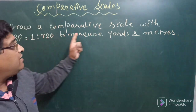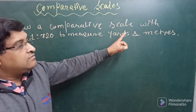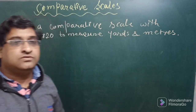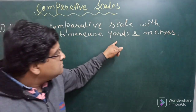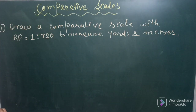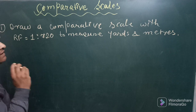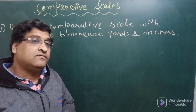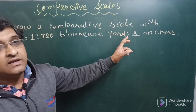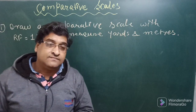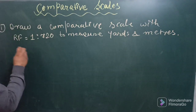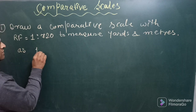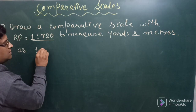Here we have one problem: draw a comparative scale with RF = 1:720 to measure yards and meters. On one side of the scale we will measure yards, and on the other side we will measure meters. We need to find the length of scale for drawing. Most of the time the length of scale is taken as either 15 centimeters, or in this case 6 inches.